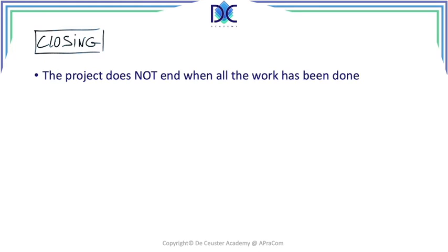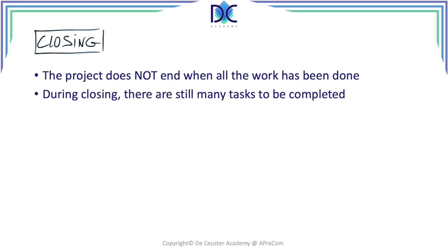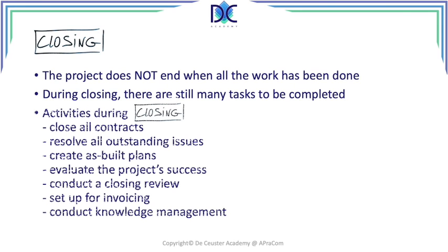Once execution, monitoring, and control are finished, the project doesn't end there — we still have closing. Typical activities during closing include reviewing all outstanding contracts, resolving outstanding issues, creating as-built plans, evaluating project success, conducting a closing review, setting up everything for invoicing — very important if you're selling services — and conducting knowledge management. All these things are done in closing.